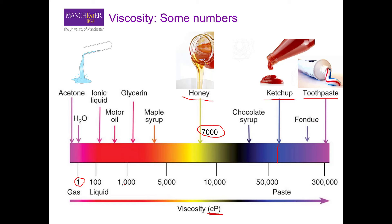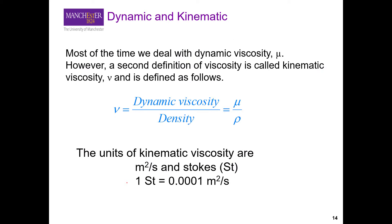Another property related to viscosity is kinematic viscosity, which you may see in some books or formulations. It is the ratio of dynamic viscosity to the density of the fluid — for example, viscosity of water divided by density of water gives kinematic viscosity of water. Its units are meters squared per second, or more commonly stokes. One stoke is equal to 0.0001 m²/s. In exams and problems, please use metric systems as it will be much more convenient.